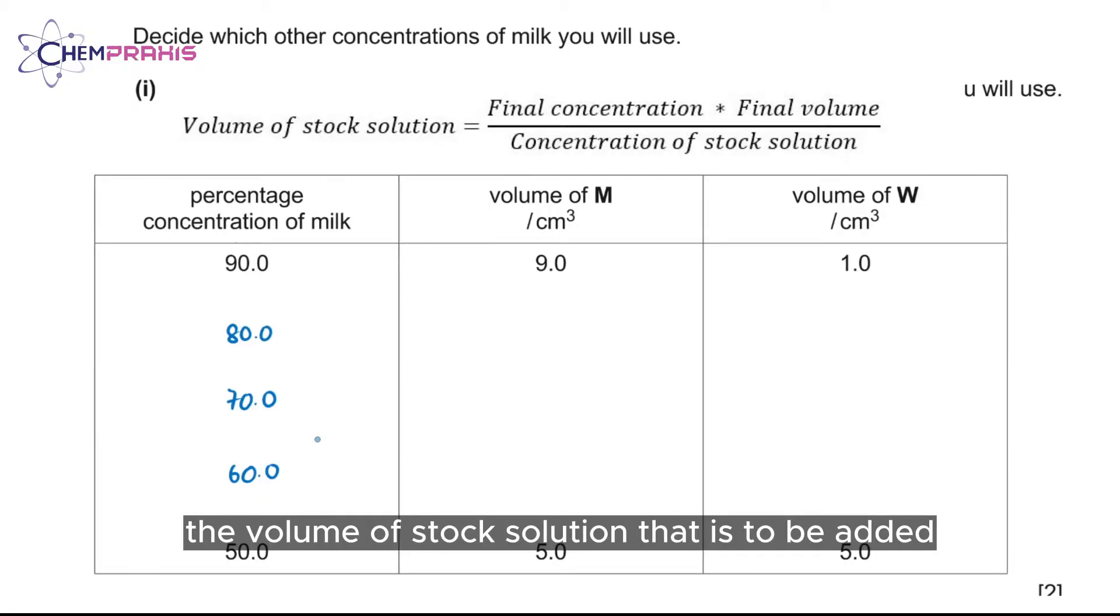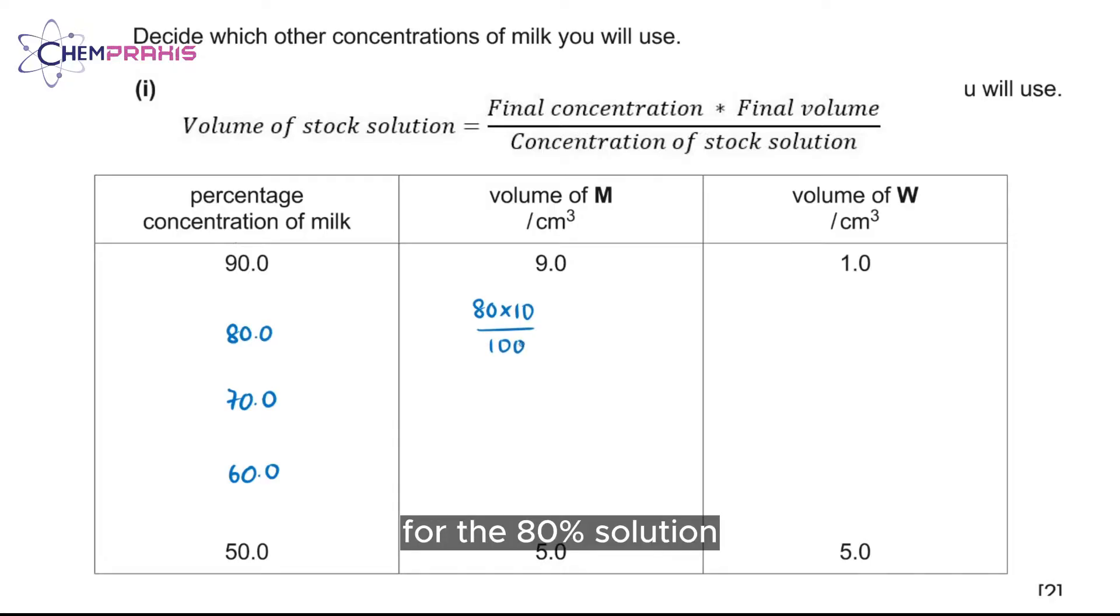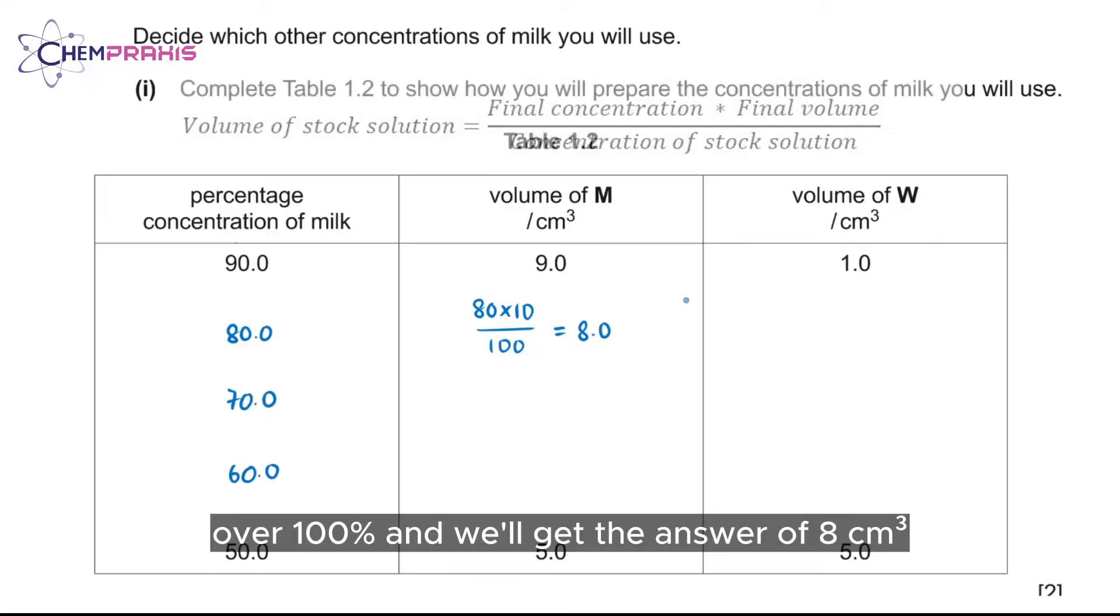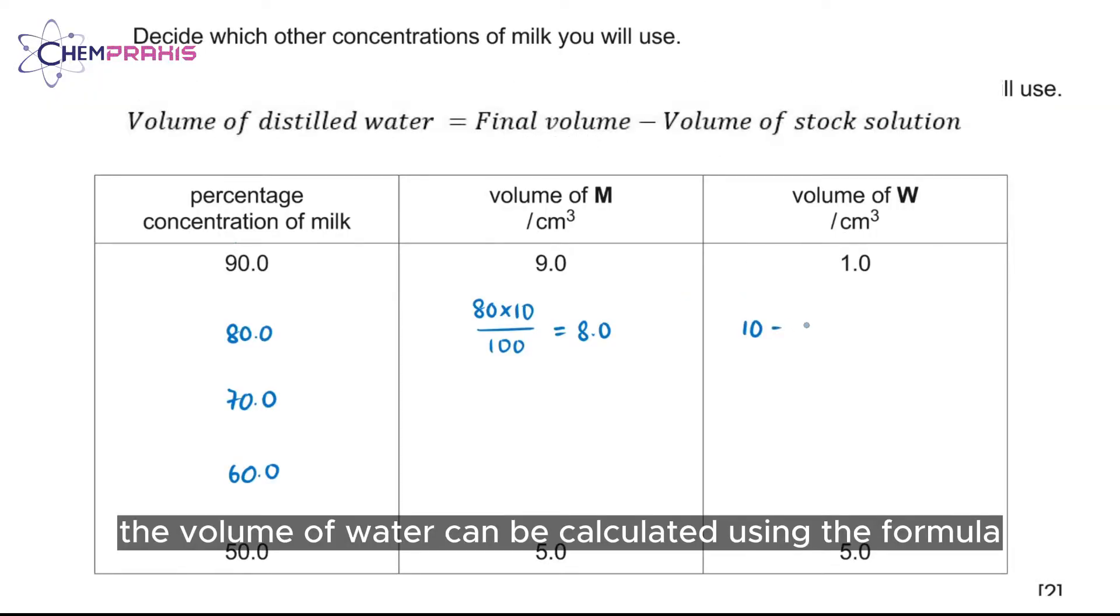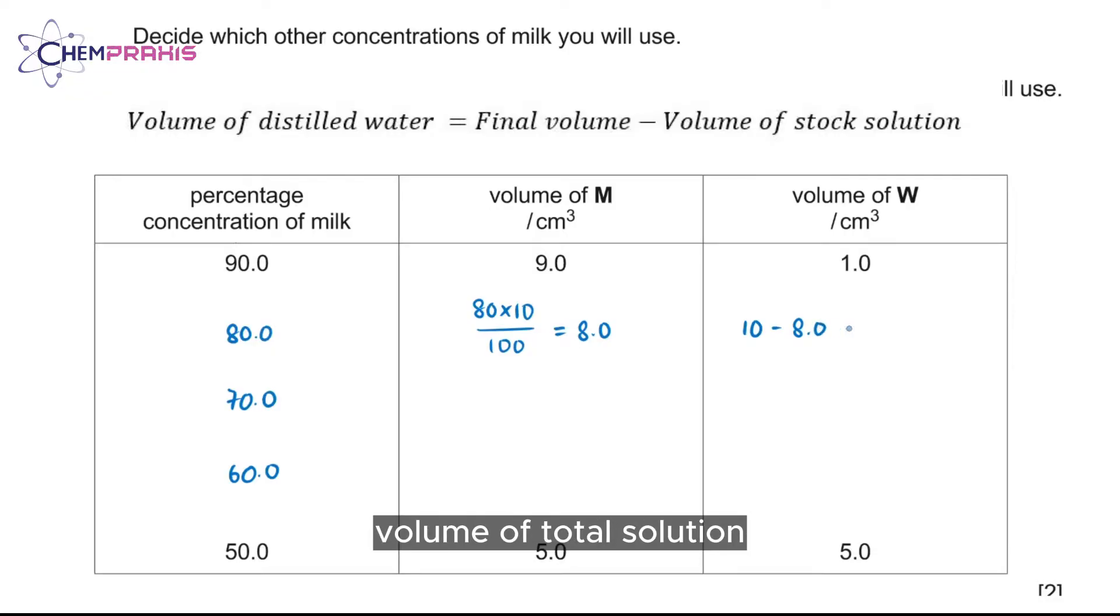The volume of stock solution that needs to be added can be calculated using the formula: final concentration times final volume over the concentration of stock solution. For the 80% solution, we can use 80% times 10 cm³ over 100% and we'll get the answer of 8 cm³. The volume of water can be calculated using the formula: volume of total solution minus the volume of stock solution. We'll get the answer of 2 cm³ here.